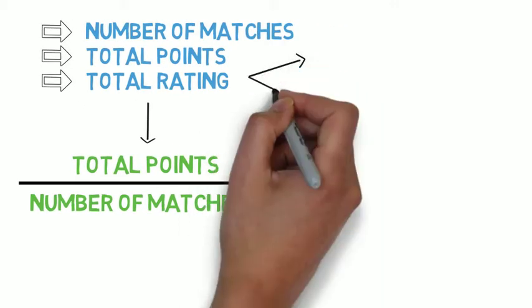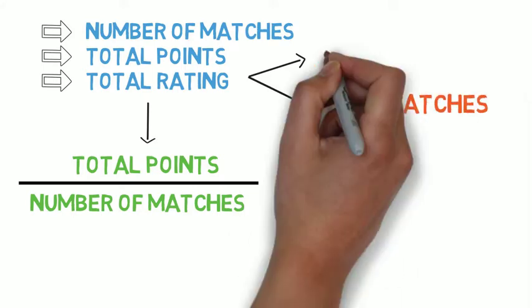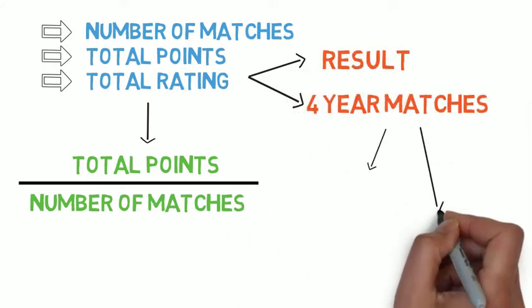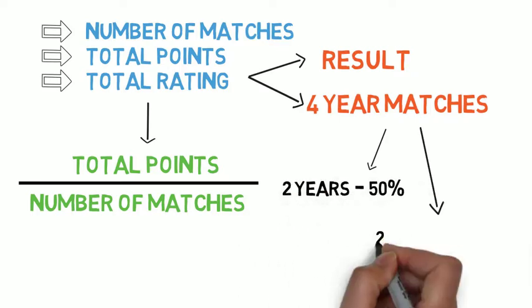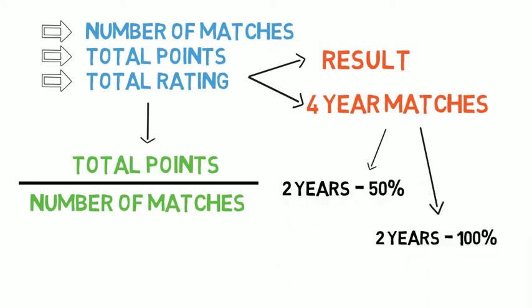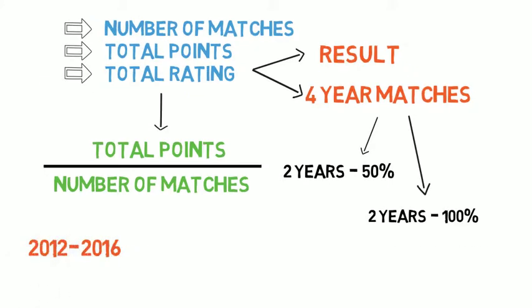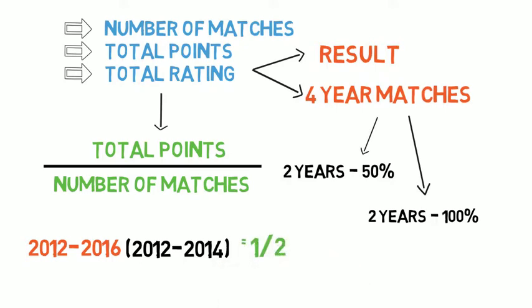Keep in mind that ratings are calculated based on the last 4 years of matches and results. In those 4 years, the first 2 years' points carry 50% weightage and the other 2 years' points carry 100% weightage. For example, if a team played from 2012 to 2016, the points earned during 2012 to 2014 will be halved — this prioritizes current form over previous form.